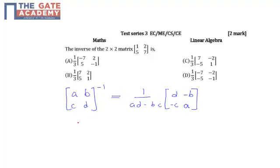So for the matrix given to us, that is 1, 2, 5, 7, what we would have is 1 divided by: 1 times 7 is 7 minus 2 times 5 is 10, so 7 minus 10.